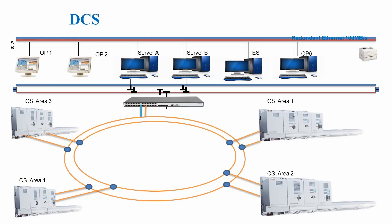So what is DCS? DCS, or distributed control system, is a control system for a process plant where control elements or controllers are distributed in the network or in the system. In this particular diagram, we have different areas and in each area we have different controllers. Area 1 has its own controller, area 2 has its own, area 3 has its own controller. All these controllers are on a fiber network connected to a particular switch, and that switch is connected to the LAN network.